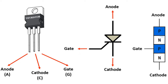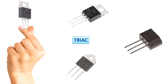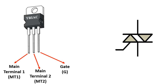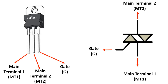Thyristors also occur in the form of PNPN. TRIACs are similar to thyristors. The abbreviation TRIAC comes from the initials of the English words Triode for Alternating Current. It is actually formed by the reverse connection of two thyristors to each other. As such, they are used for switching purposes in AC power electronic circuits. Pin names differ from thyristors, and these have three pins as shown here.